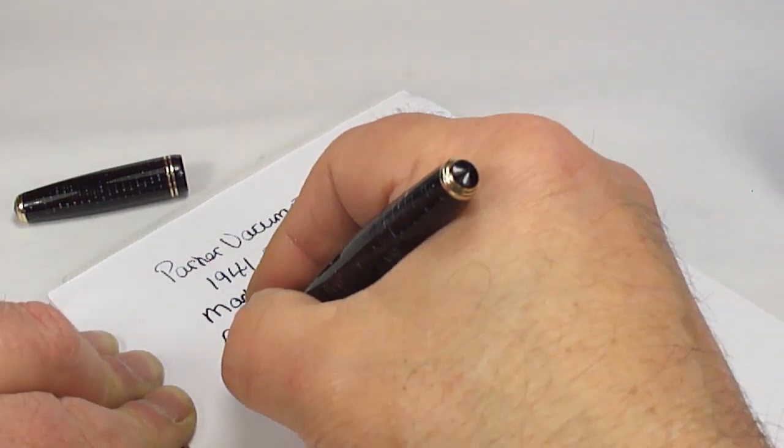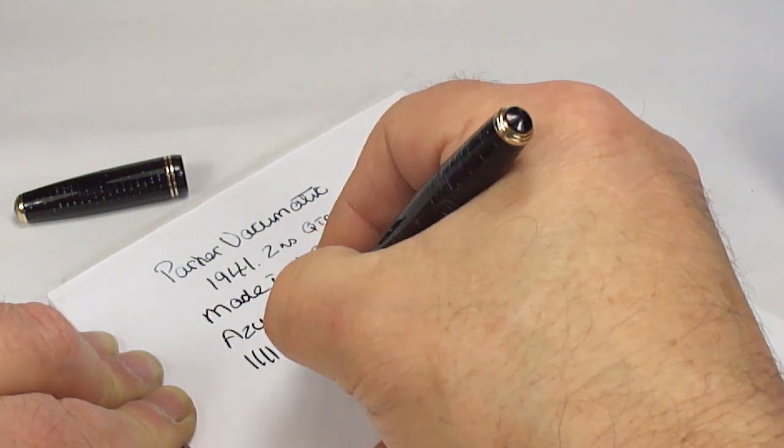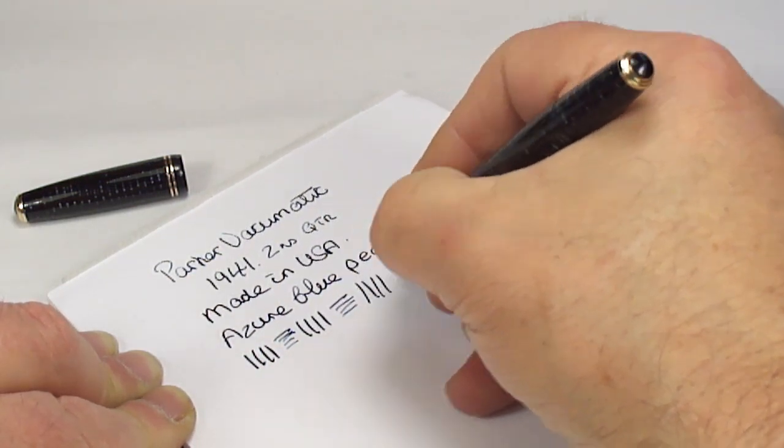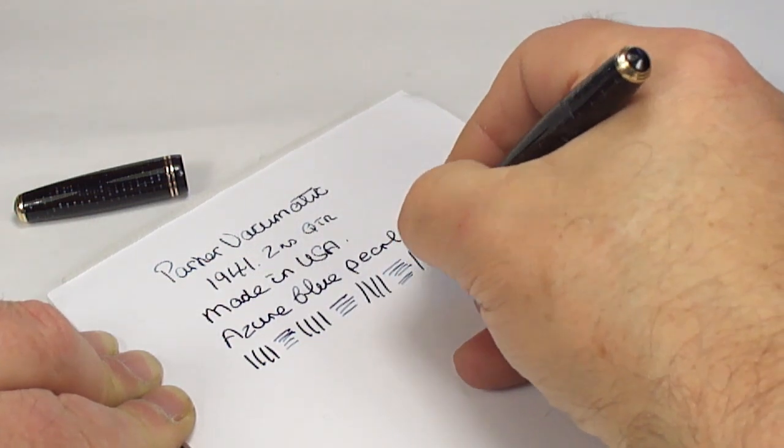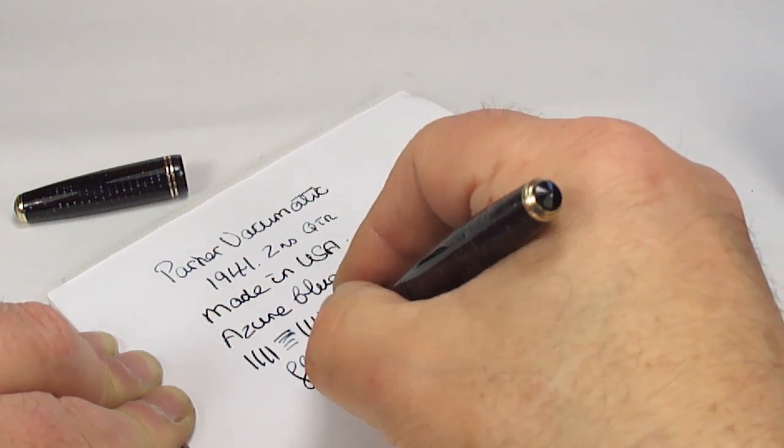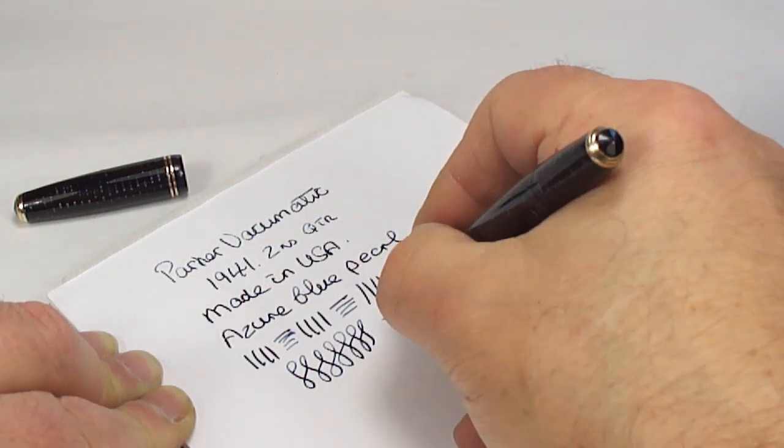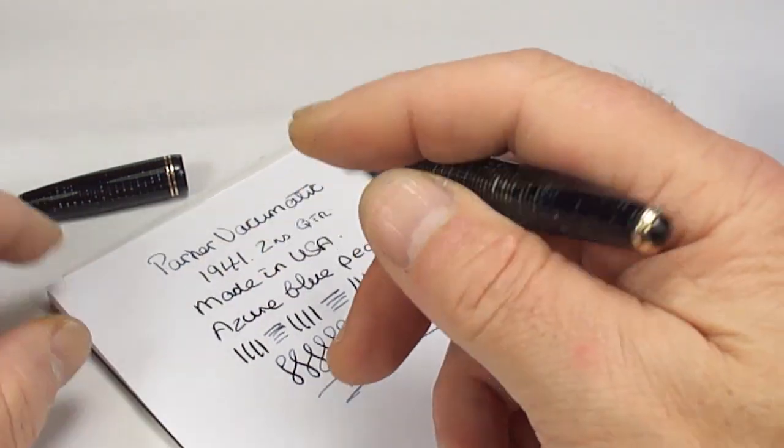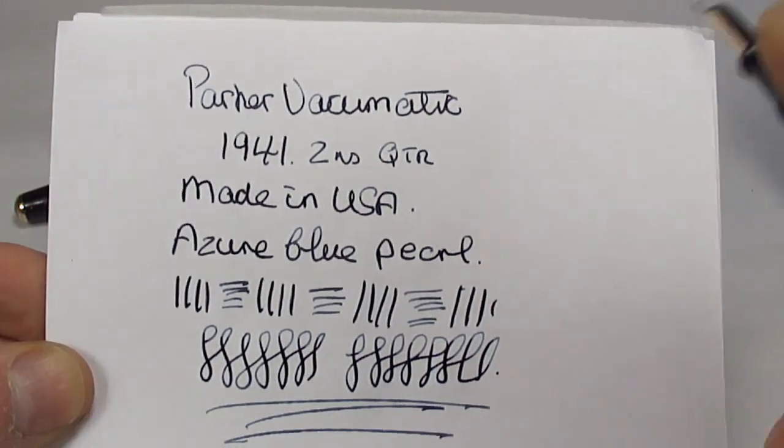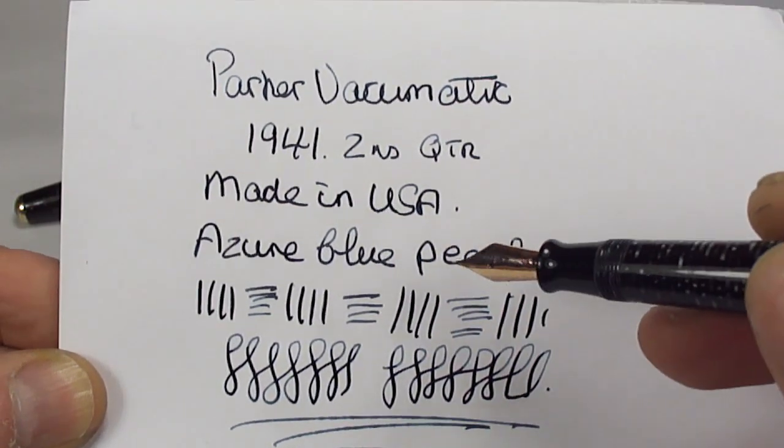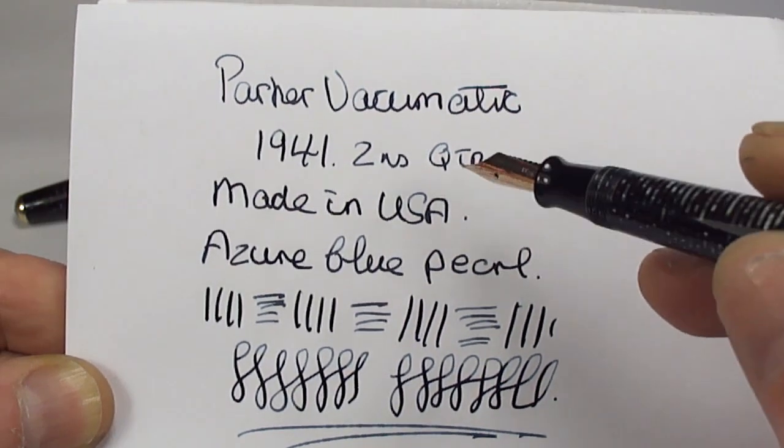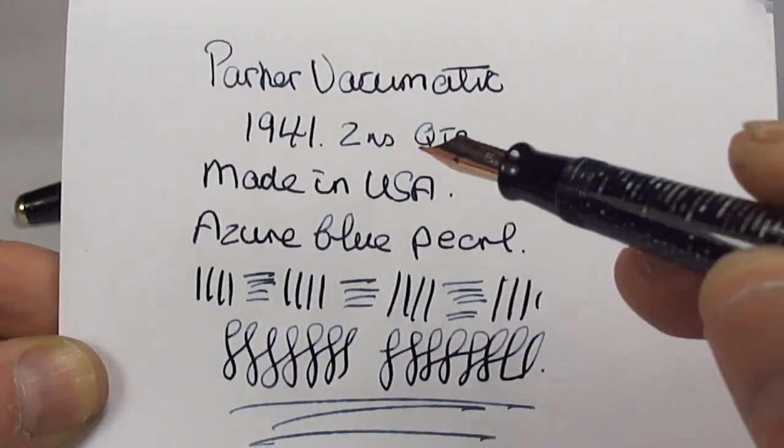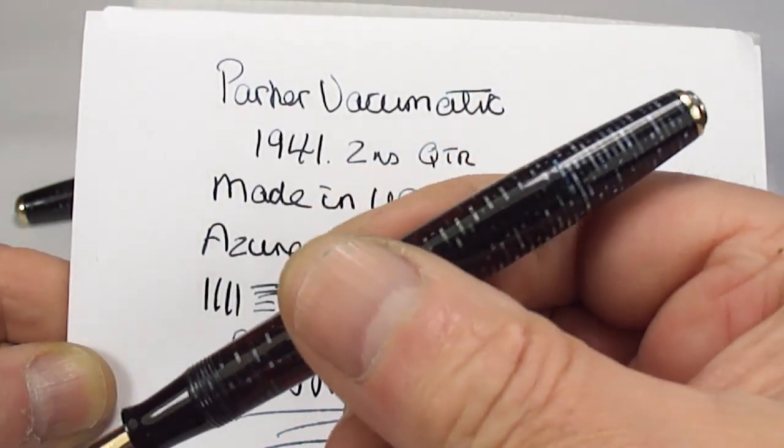Does it have any flex in the nib? I would say no, it's quite a hard nib, but a lovely writer. It's actually writing lovely and smooth. I'm more than impressed. I would say it's writing with maybe a fine to maybe medium, but again, a lovely smooth writer.